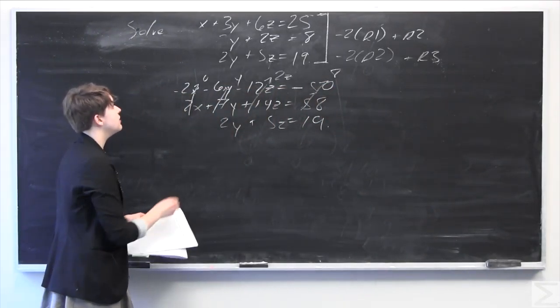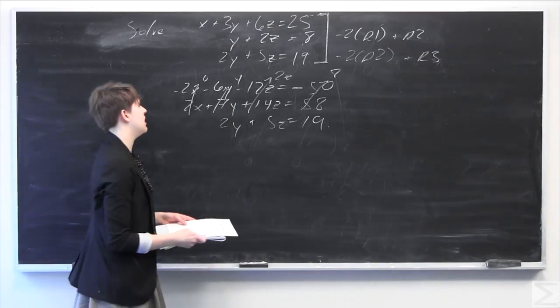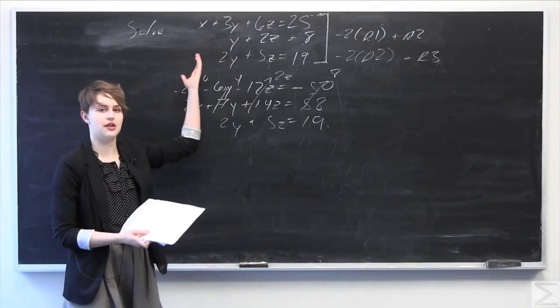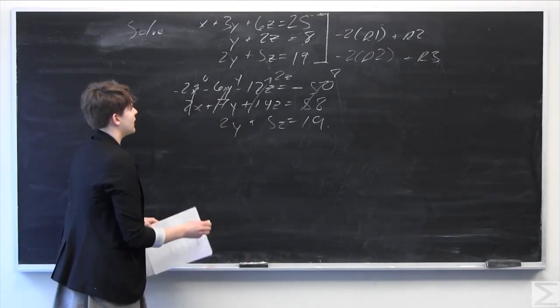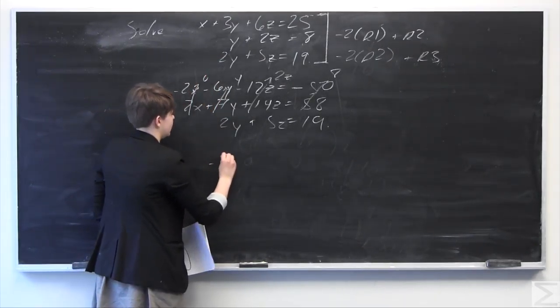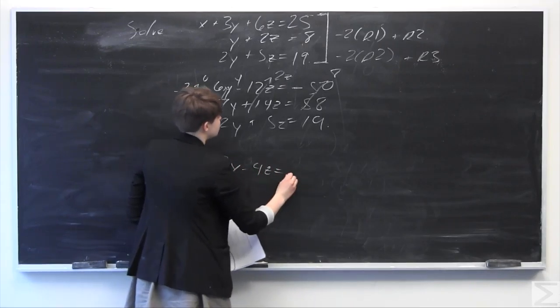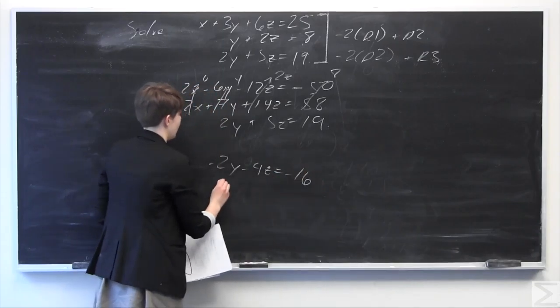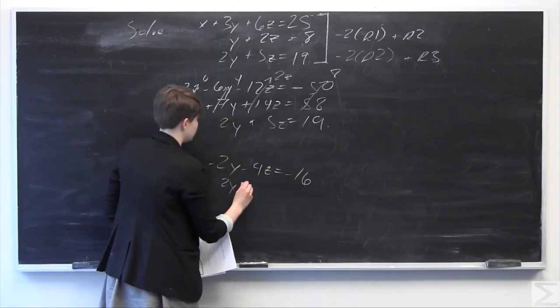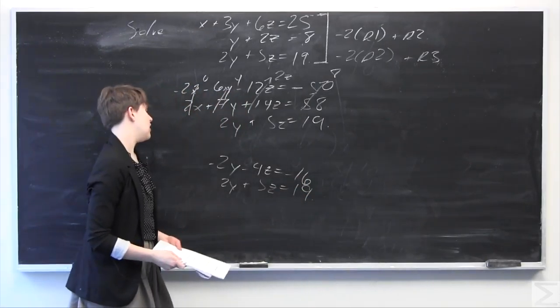I'll write out the second and third rows. Negative 2 times row 2 gives us negative 2y minus 4z equals negative 16. And the bottom row is 2y plus 5z equals 19.